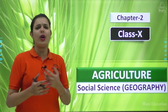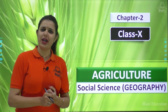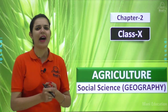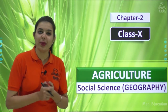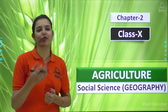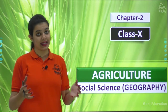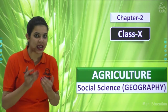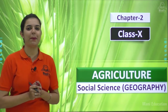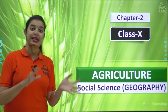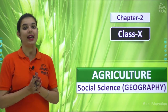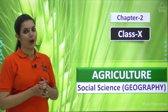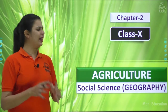Then we will look at what are the different technological and institutional reforms or changes that have been initiated by the government of our country to improve agriculture. What steps has our government taken to improve the agriculture sector — we will study all of this in this chapter. We will also study the impact of globalization on agriculture.